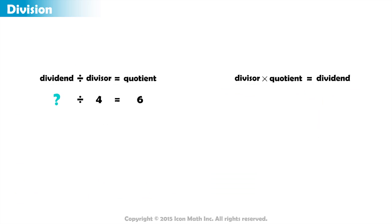In this case, our dividend is the unknown. So we can think of this as 4, which is our divisor, times 6, the quotient, equals the dividend.